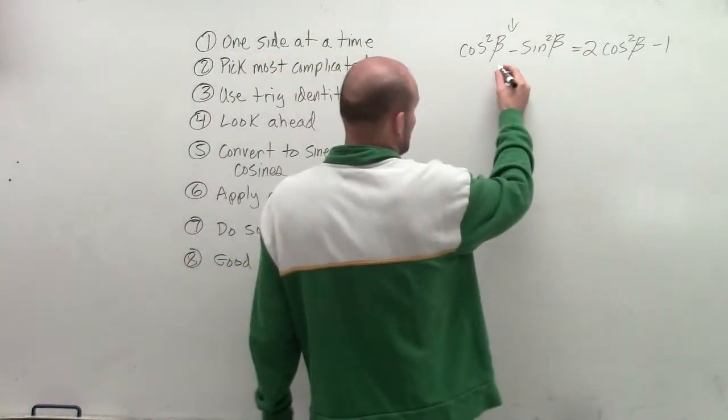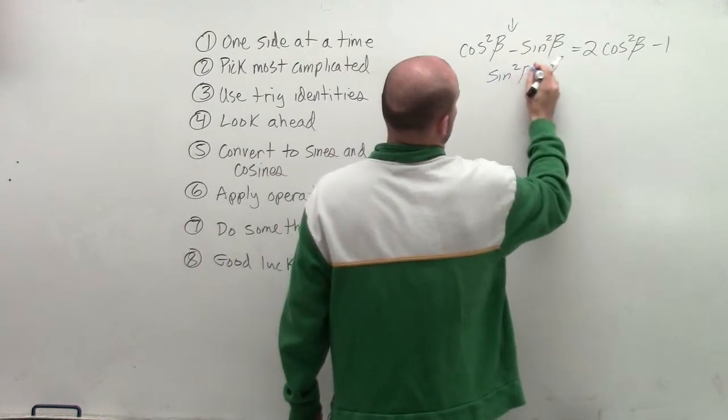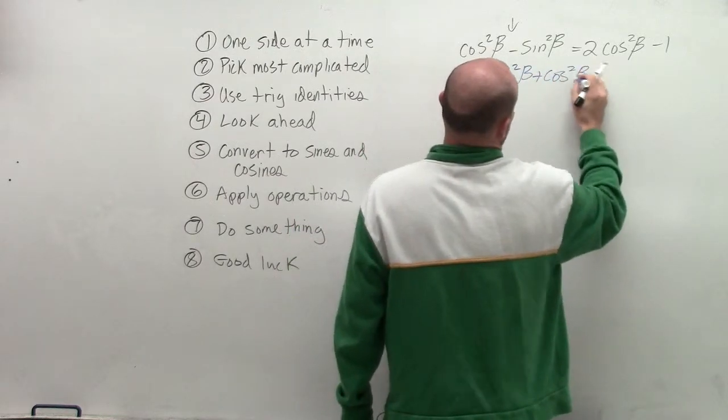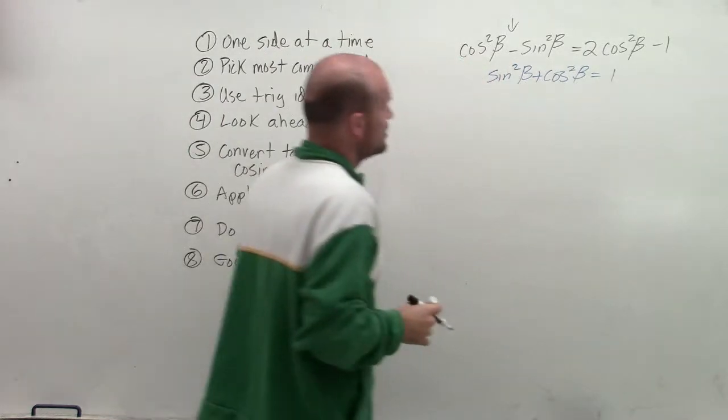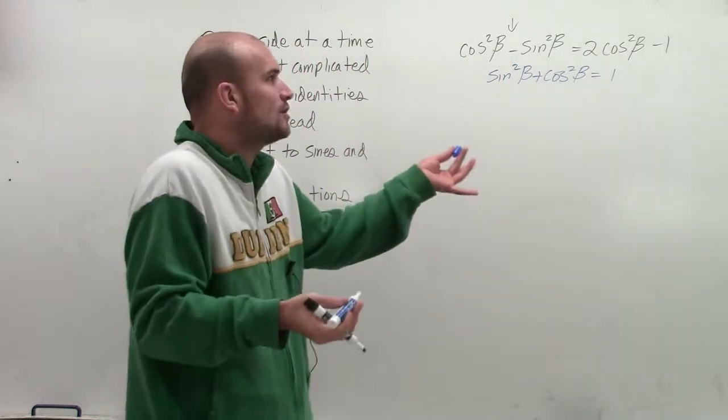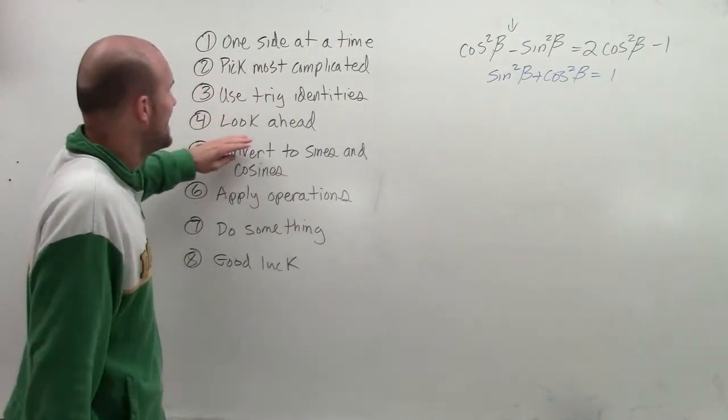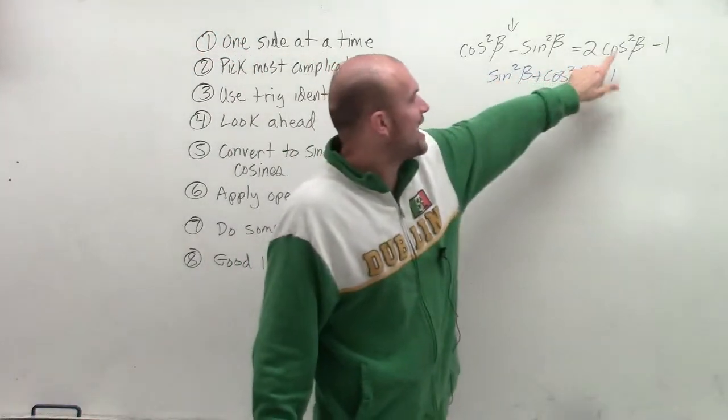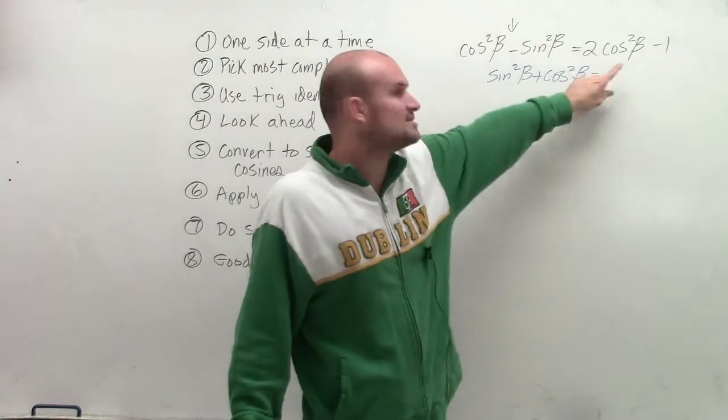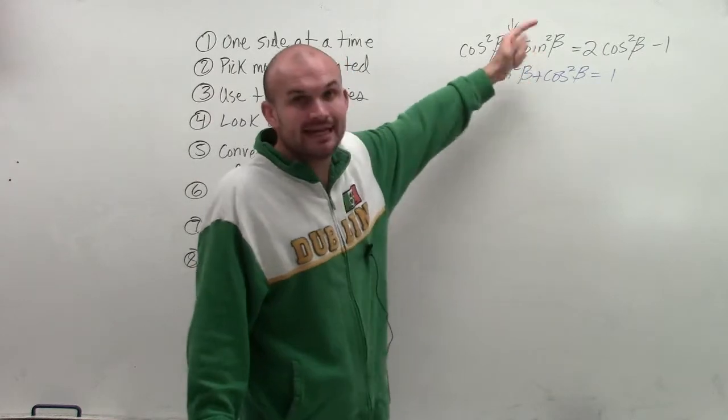And the main identity that I'm going to want to use, I'll write in blue, is going to be sine squared of beta plus cosine squared of beta equals 1. So by applying that, what I can do is I can either solve for either sine or cosine. And I need to determine what do I need to solve for. That's part of the looking ahead. I want to get everything on the left side in terms of cosine. So therefore, I'm going to want to rewrite my sine in terms of cosine.